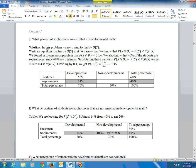Okay, on part E, it says what percent of sophomores are enrolled in developmental math? What percent of sophomores? So it's out of sophomores. What percentage of these sophomores are in developmental math? It's the given thing.